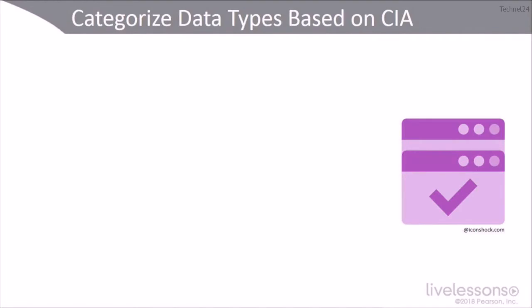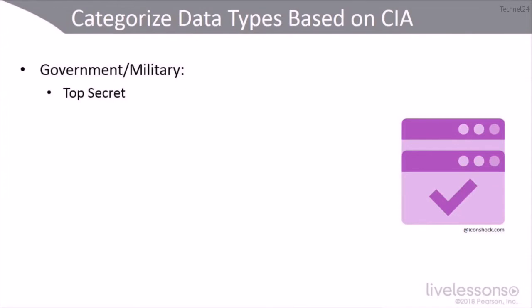We also have designations of logical and physical assets — sometimes for the military and government, sometimes for the public sector. In government and military, we have top secret: data for which you make a great effort and undergo significant cost to guarantee secrecy. Very few individuals have access on a need-to-know basis. Secret is data you want to make a significant effort to keep secure, with more people having access than top secret, escalated on a case-by-case need-to-know basis — like in the Bourne movies where Pamela Landy was finally given top-secret access to that data.